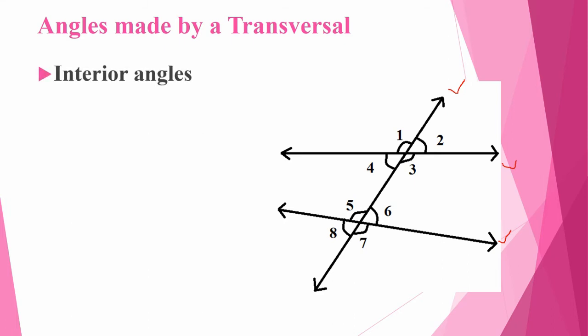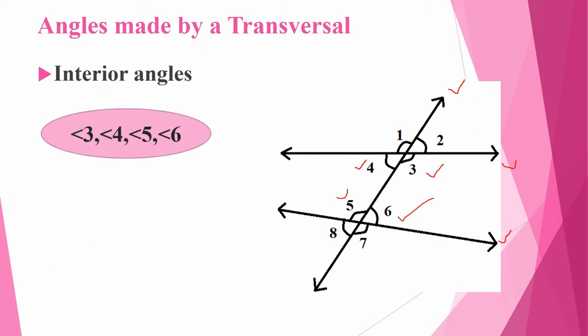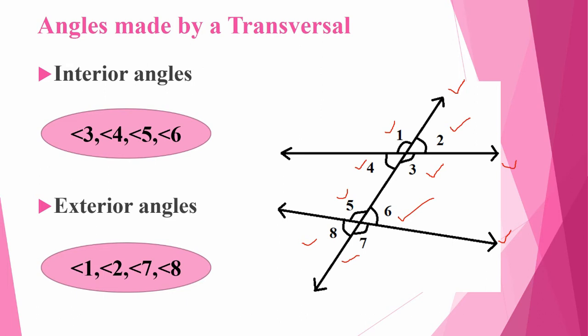First one: interior angles. Interior means inside. So angle 3, angle 4, angle 5, and angle 6 — these are interior angles. Next, exterior angles — exterior means outside angle. So outside the transversal: 1, 2, 8, and 7. These are exterior angles. Interior means inside, exterior means outside.